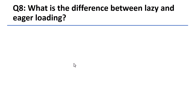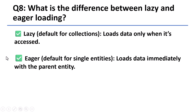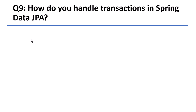Together, these annotations tell the JPA provider how to map objects in your application to records in the database. Question 8: What is the difference between lazy and eager loading in JPA? Lazy loading means the related data is not fetched from the database until it is explicitly accessed. Eager loading, on the other hand, means related data is loaded immediately along with the main entity.